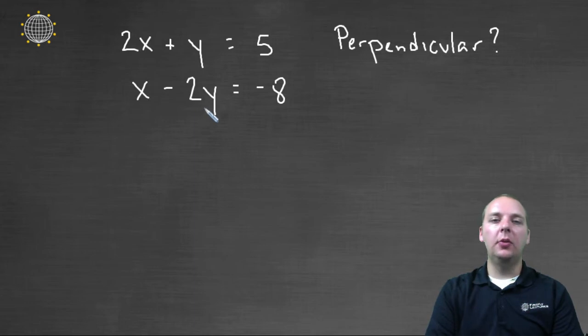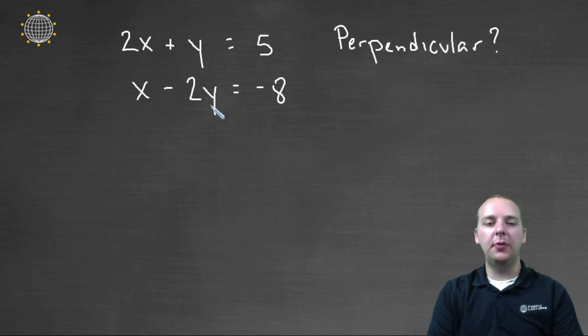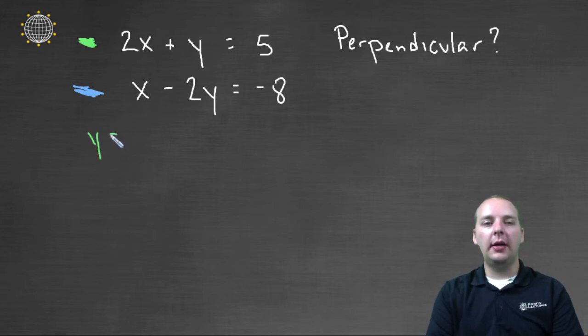Now typically though, they'll make it a little bit more challenging than that. They'll make you work a little bit. Usually you'll have to put it in slope intercept form. So let's try this. We'll do this one in green, and we'll do this one in blue. Okay, so the green equation, if we solve for y, we'd get y equals negative two x plus five, when we subtract two x to the right hand side.